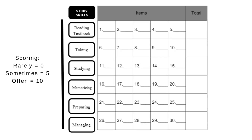Scoring: Rarely equals 0, Sometimes equals 5, Often equals 10. After you have answered all the items, copy this scoring on your paper and put your score for each question on the appropriate blank, and add your total score for each area. For the scoring, a total score of 31 to 50 shows that this study skills area seems solid for you, while a total score of 0 to 30 shows that this study skills area may need some improvement.